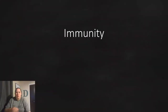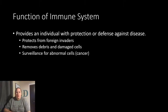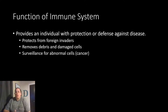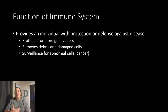We want to take a look at immunity. Immunity is going to provide an individual with protection or defense against a disease — that is technically what your immune system is out to do. It does this in a number of ways: one way is it protects you from foreign invaders like microorganisms, bacteria, viruses, and fungus. It also helps remove debris and damaged cells, so if any tissue damage has taken place or in the process of destroying the foreign invader there's debris, they're going to come in and clean up the area.